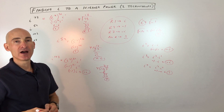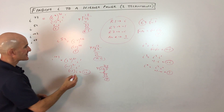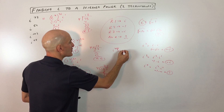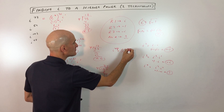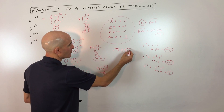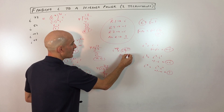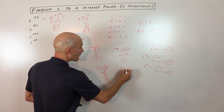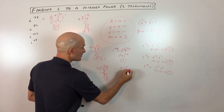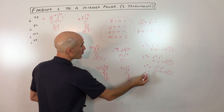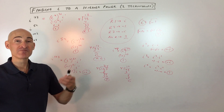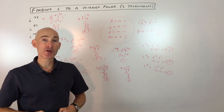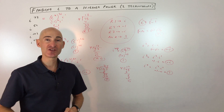Let's do one final example to solidify everything: i to the 48th power. i squared to the 24th power — power to power you multiply — i squared is negative 1, and negative 1 to an even power is positive 1. Using divide-by-4: 48 divided by 4 goes in 12 times with zero remainder, so the answer is 1 — same result. I hope this helped you understand how to work with higher powers of i. Subscribe to the channel and check out more videos on Mario's Math Tutoring YouTube channel.